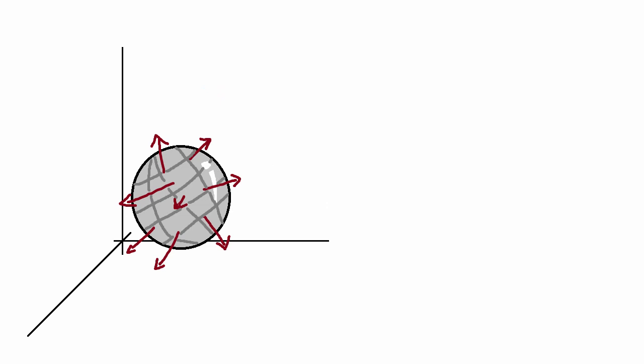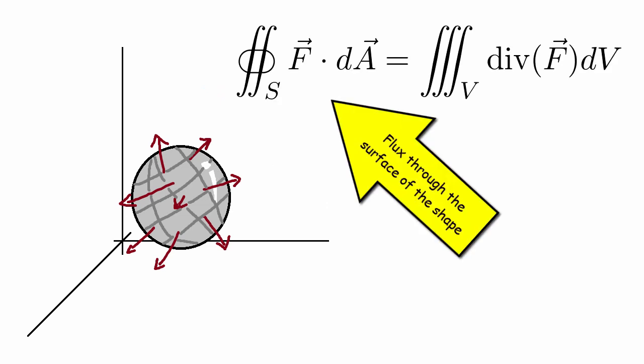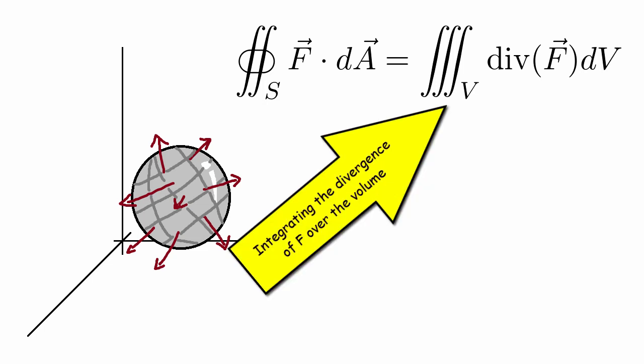It's saying that if we have a closed region, then the flux going through the closed surface would just be equal to the integral of the divergence across the entire closed volume. And the divergence theorem is quite an important theorem in vector calculus because it links the idea of flux together with the idea of divergence. It basically tells you how these two things are related.